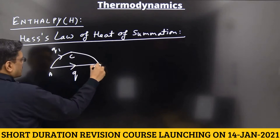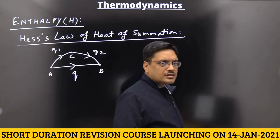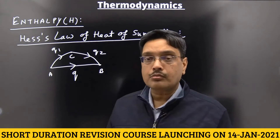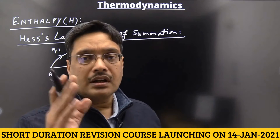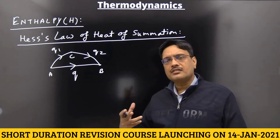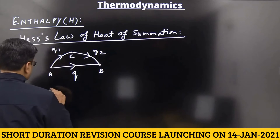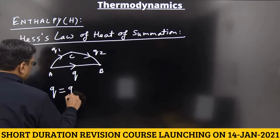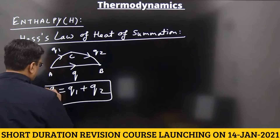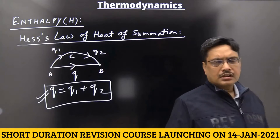Now if H is converted into C, then Q1 heat is released, and C is converted into B, then Q2 heat is released. According to this law, if any transformation proceeds in a single step or more than one step, the total heat evolved or absorbed is always constant. So Q is equal to Q1 plus Q2.